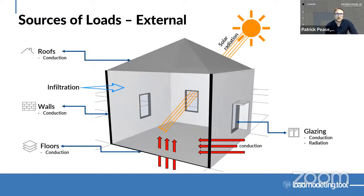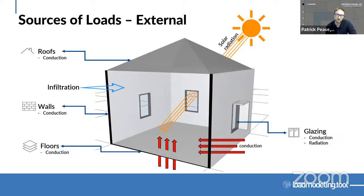Looking at the sources of loads externally — conduction is going to be one of the major ones. All the surfaces of our building will have some form of conduction, which is simply the transfer of heat through a surface adjacent to two different temperatures. Heat always travels from higher to lower: in winter when it's colder outside, heat leaves the building; in summer when it's hotter outside, heat enters through conduction. Solar radiation comes in through our windows and adds heat to the building based on window size and performance — the solar heat gain coefficient determines how much solar radiation can be blocked by the glass, and shade devices like fins can block some of that solar radiation as well.